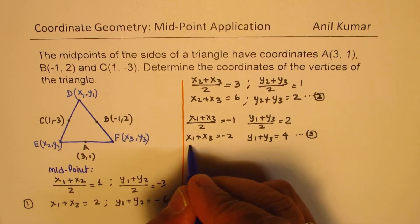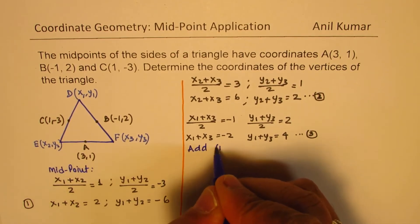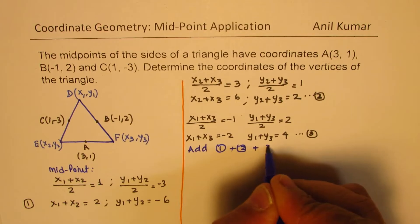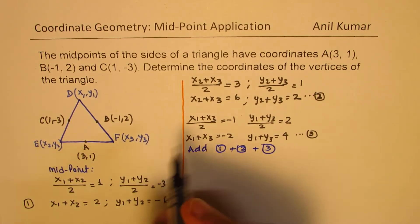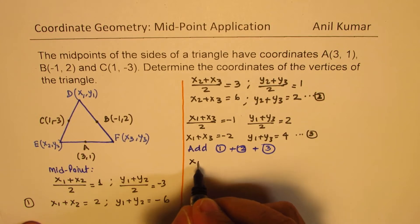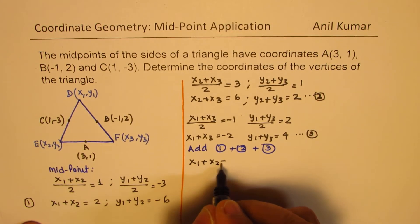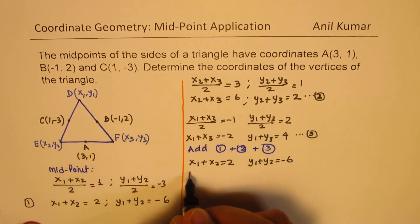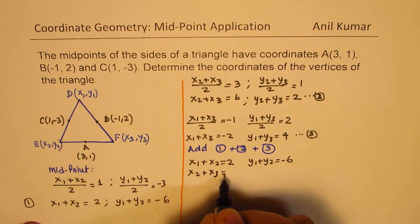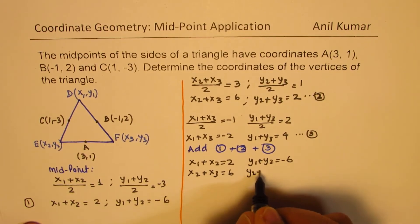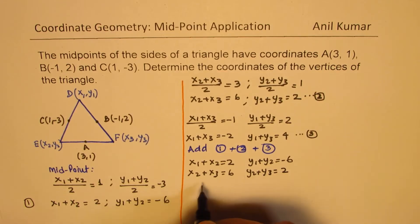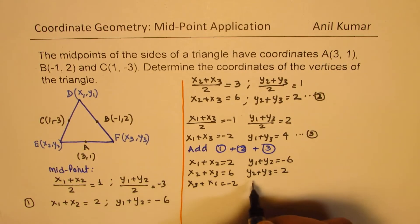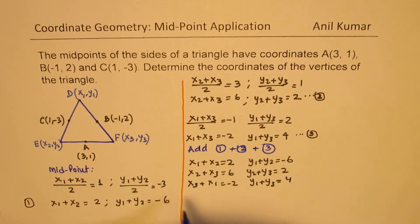Now what happens when I add equations 1, 2, and 3? That is interesting. See what we have here is something like this: we are writing x₁+x₂ equals to 2, y₁+y₂ equals to -6. Then we got x₂+x₃ equals to 6, y₂+y₃ equals to 2. And we get x₃+x₁ = -2 and y₁+y₃ equals to 4.